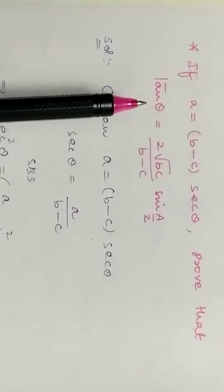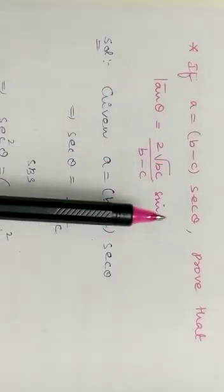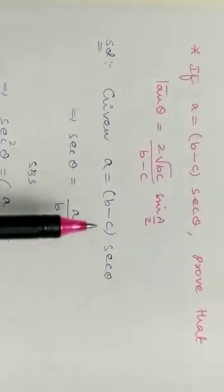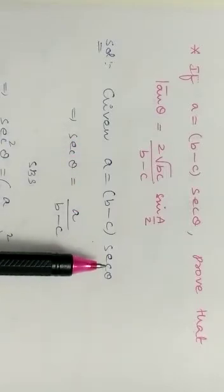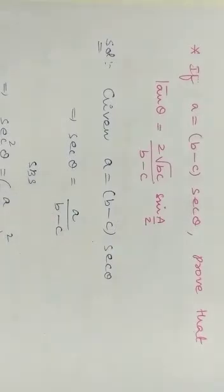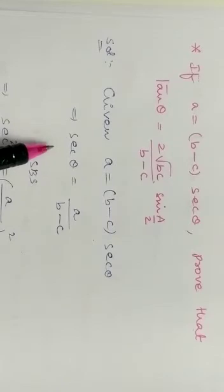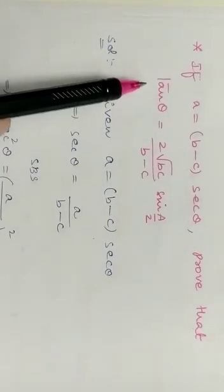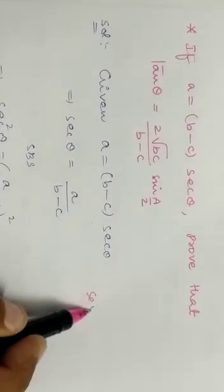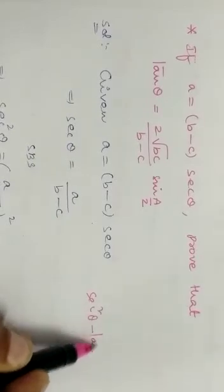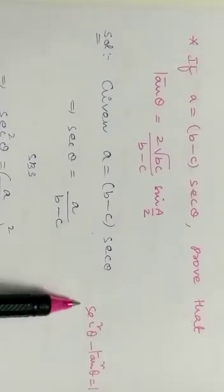Given: a equals (b minus c) times secant theta. Here (b minus c) is in multiplication, so by shifting to division, secant theta equals a divided by (b minus c). What is given is secant theta; what we need to find is tan theta. The relation between secant theta and tan theta is secant squared theta minus tan squared theta equals one.